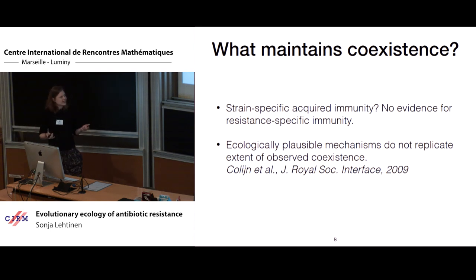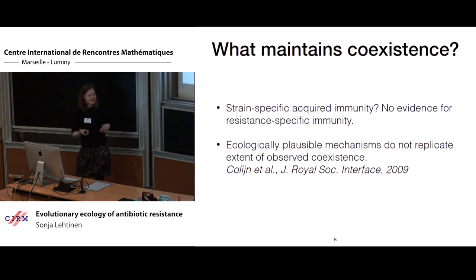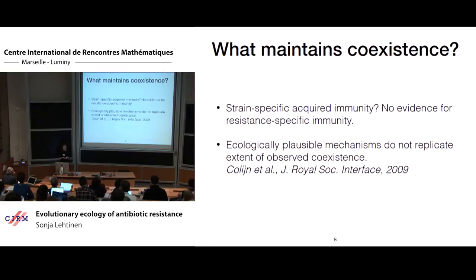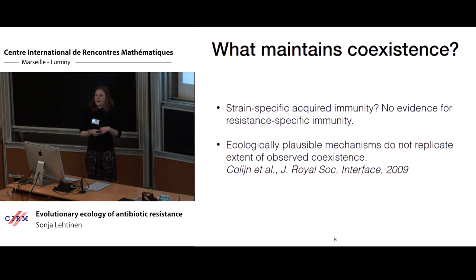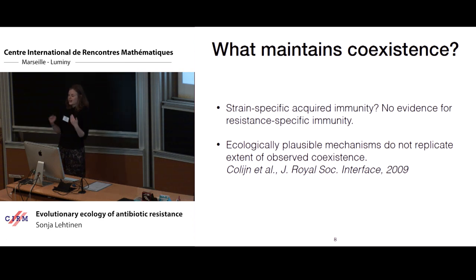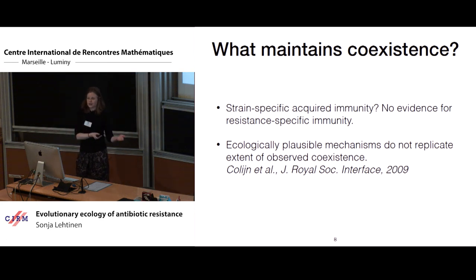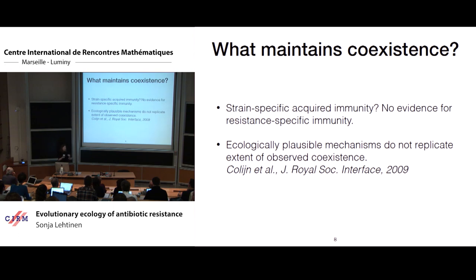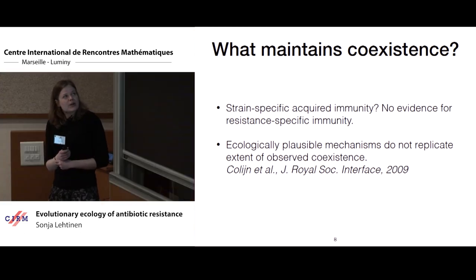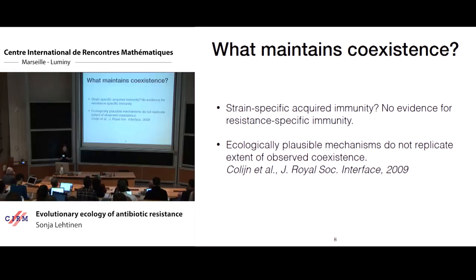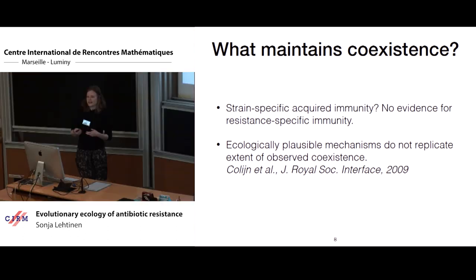So the question is: what is it that maintains this coexistence? Coexistence of different strains is not that unusual — I mentioned the 90 different serotypes we see in the pneumococcus. A very typical mechanism that might maintain this is strain-specific acquired immunity. If there is strain-specific acquired immunity and you are a high-frequency strain, there are more people who've seen the same strain before, so fewer susceptible hosts to infect. This is known as balancing selection. But the problem with this explanation for the case of resistance is that there is no evidence of resistance-specific immunity, and earlier work by Caroline Colijn and collaborators found that none of the ecologically plausible mechanisms replicated these observed patterns of coexistence.